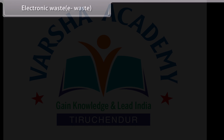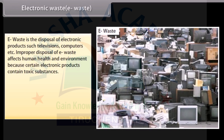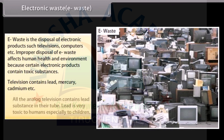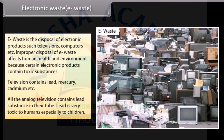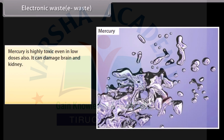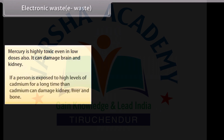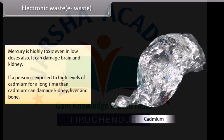E-Waste is the disposal of electronic products such as televisions and computers. Improper disposal of e-waste affects human health and the environment because certain electronic products contain toxic substances. Televisions contain lead, mercury, and cadmium. Lead is very toxic to humans, especially to children. Mercury is highly toxic even in low doses and can damage the brain and kidneys. Exposure to high levels of cadmium over a long time can damage the kidney, liver, and bone.